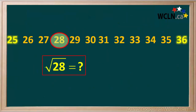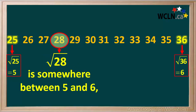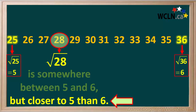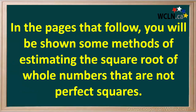We know that 28 is between the two perfect squares 25 and 36, and that the square root of 25 is 5, and the square root of 36 is 6. So the square root of 28 is somewhere between 5 and 6. But because 28 is closer to 25 than 36, we can assume that the square root of 28 is closer to 5 than 6. In the pages that follow, you will be shown some methods of estimating the square roots of whole numbers that are not perfect squares.